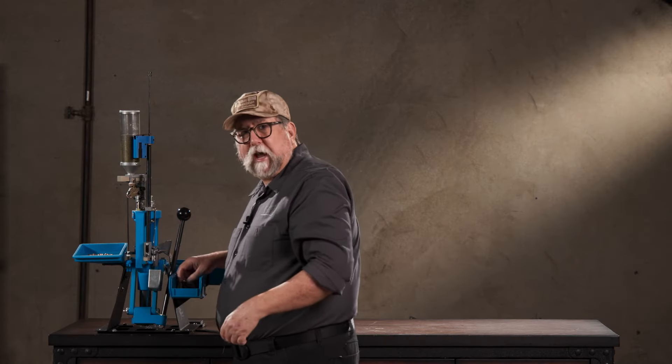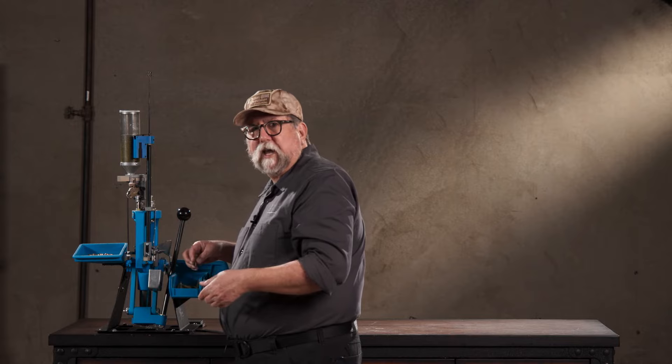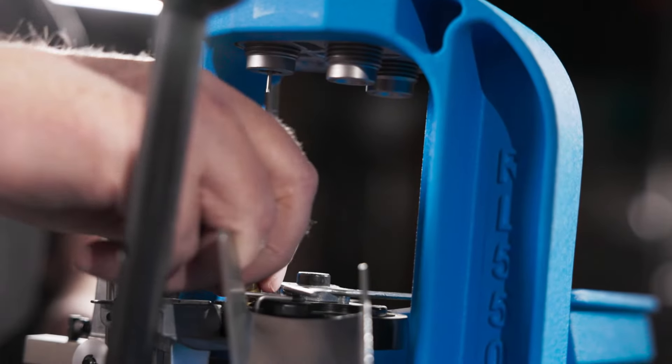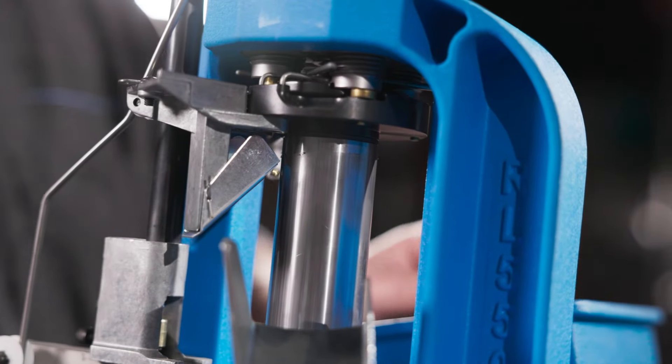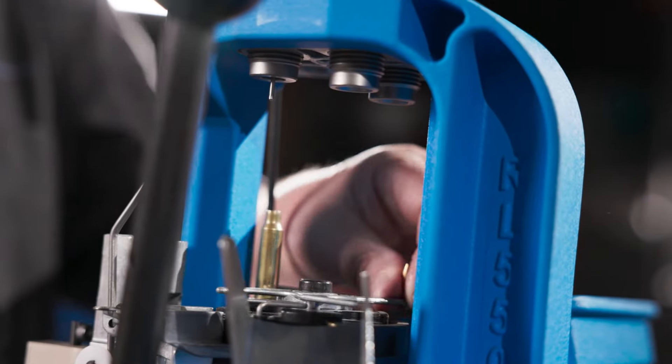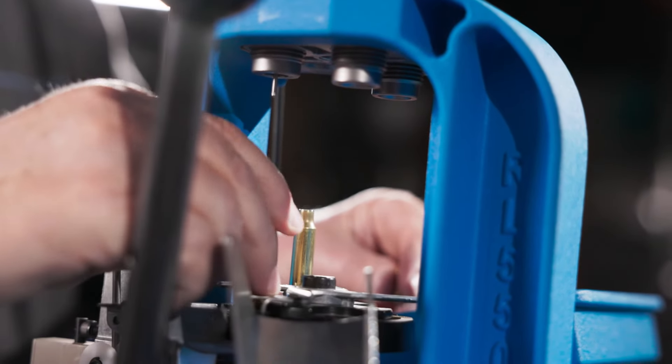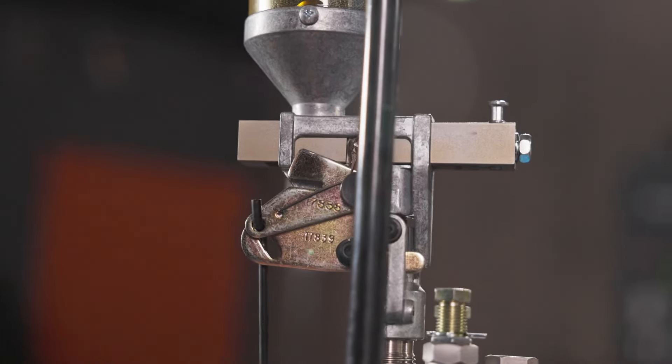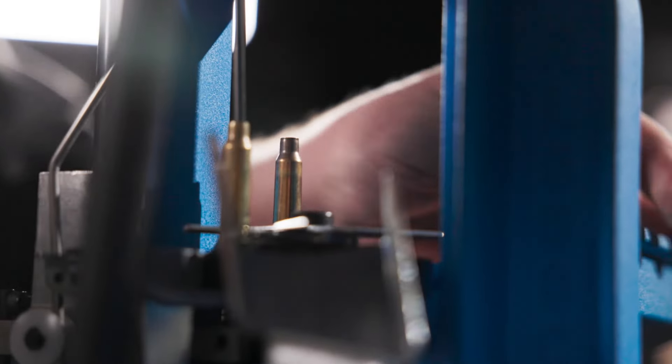Now I'm going to show you how to run it progressively, so we're going to run cases in all four stations simultaneously. Case in the shell plate in one, resize deprime, prime, advance. Slide another case into the shell plate, handle down, drops powder, press forward, seat the primer, index.